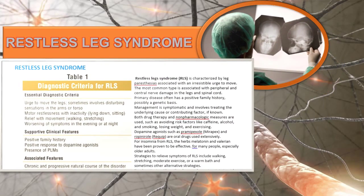Restless leg syndrome is characterized by paresthesias associated with an irresistible urge to move. The most common type is associated with peripheral nerve or cranial nerve damage in the legs or the spinal cord. It is often a permanent disease with a positive family history and may have a genetic basis. Drug therapy includes dopamine agonists such as Mirapex and Requip, and if the patient is experiencing insomnia, melatonin or other sleep aids may also help.